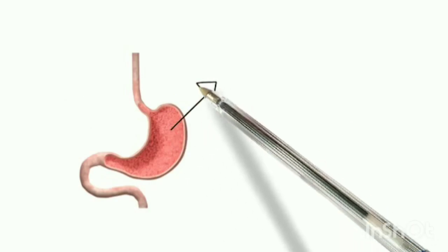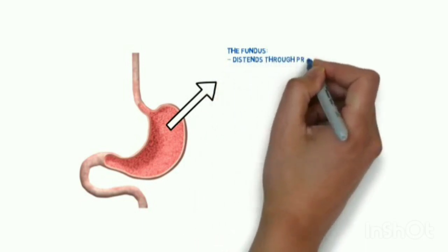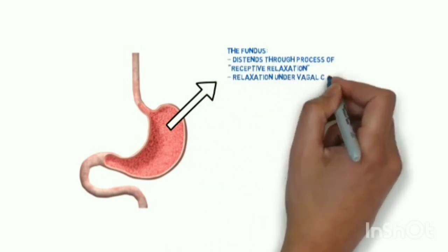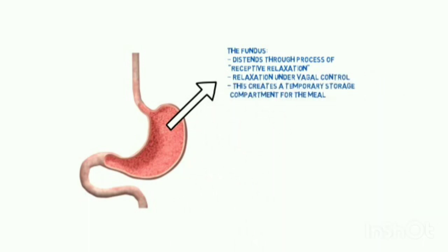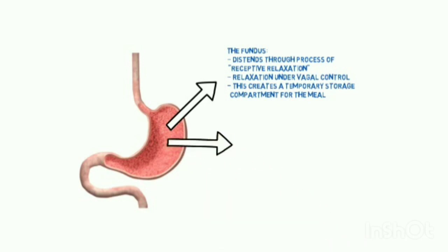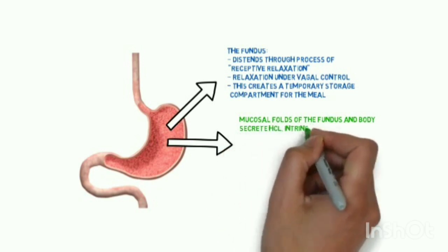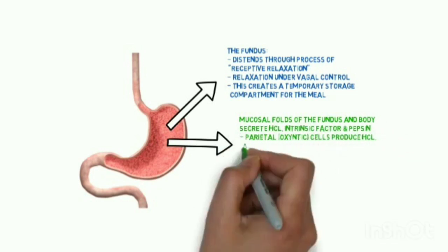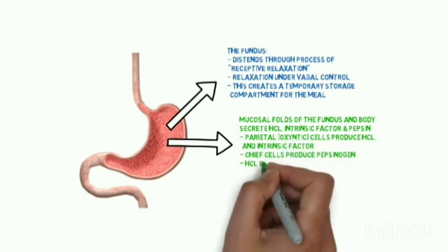The fundus distends through the process of receptive relaxation under vagal control, creating a temporary storage compartment for the meal. The mucosal folds of the fundus and body secrete acid, intrinsic factors, and pepsin. Parietal cells produce acid and intrinsic factor; chief cells produce pepsinogen, which is converted to pepsin by acid.